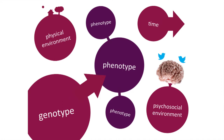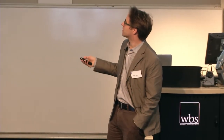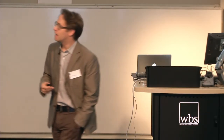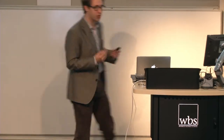Here's my universe. We have the genotype — the genetic variance. We have the phenotype, so that's the disease outcome or the human behaviour. But this relationship between genotype and phenotype, genetic variation in the outcome, takes place in context: in the context of physical environments, also in the context of psychosocial environments, and across time, across development.